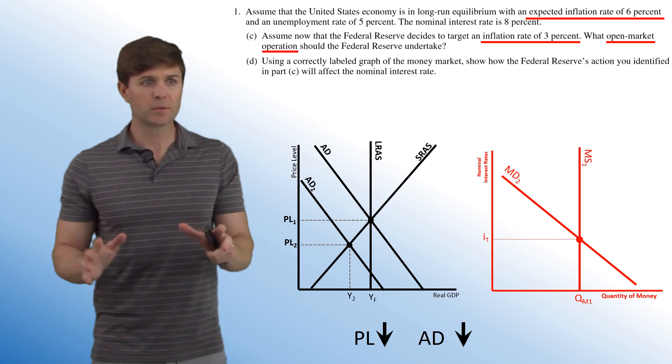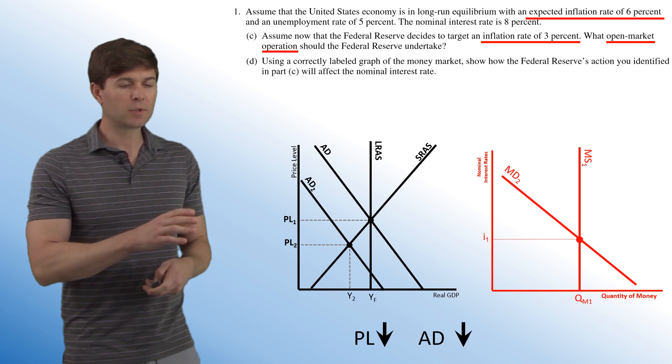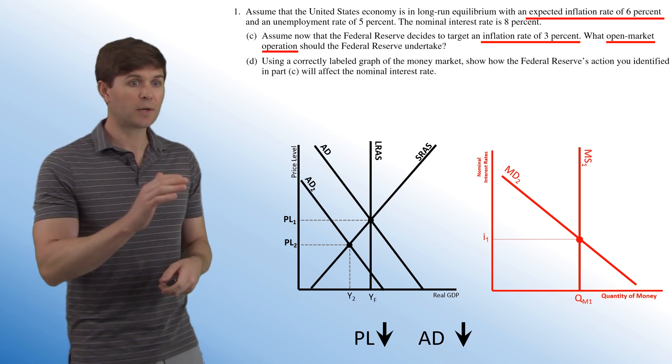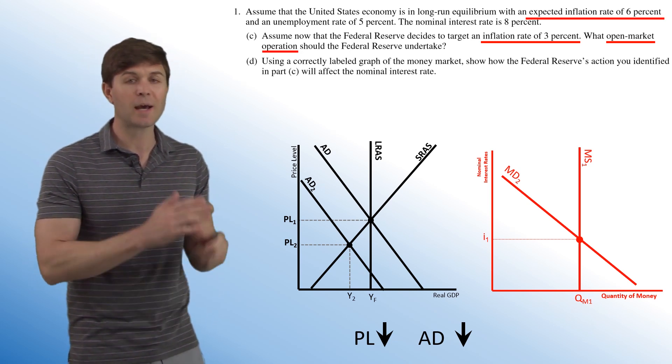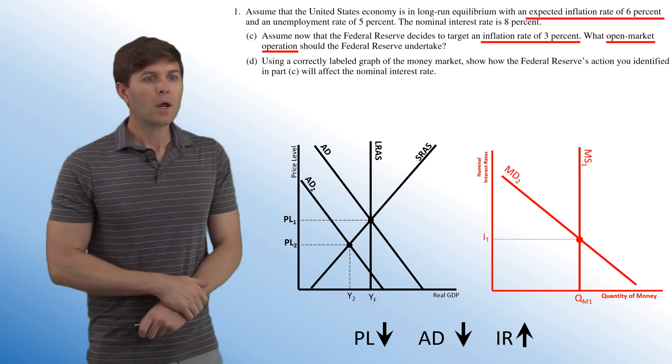What open market operation can the Federal Reserve engage in to get to this point, to drop those price levels, to get the expected inflation rate from 6% down to 3%? So we want aggregate demand to go down. Here's our money market. Part D is going to have us draw this out, so we're going to do it right now.